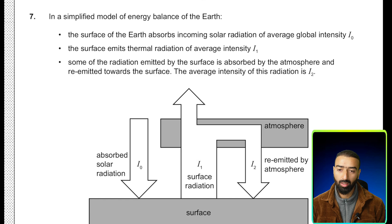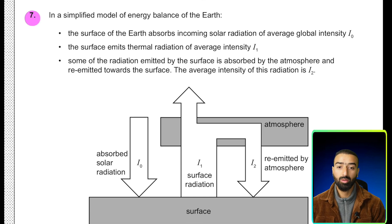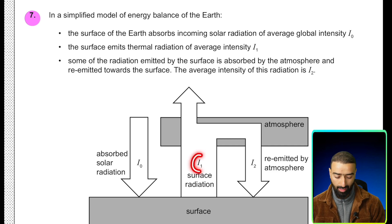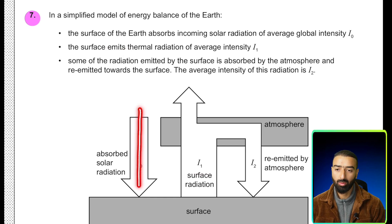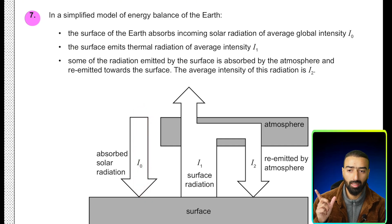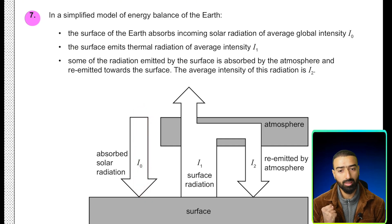Mind you, there is no reflection. All the energy that goes out, that's I1, is emitted. Emission is different from reflection. If there were reflection, then the beam would go in and bounce back off. But that's not what this image is saying. There is absorption first, and then there is re-emission.